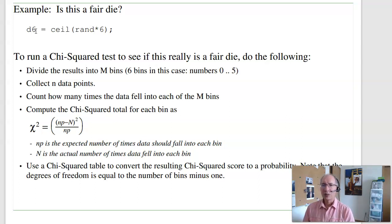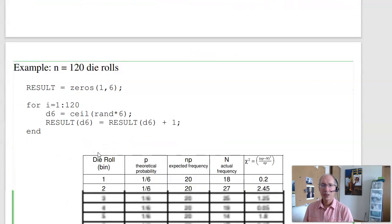You need at least two bins. So, split the data into m bins. I could do the numbers one through six. I then collect some data. Count how many times the data fell into each bin. And then compute the chi-squared score. This is the expected number of times the data comes up in each bin, minus the actual number of times, squared, divided by the expected number of times. Add them all up for all bins. Once I get my chi-squared value, I convert that to a probability using a chi-squared table.